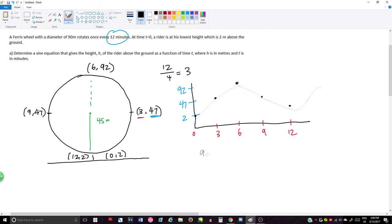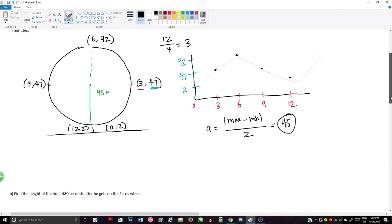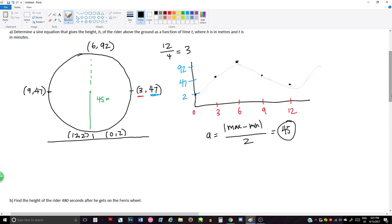So we have our amplitude, which is amplitude, it's max minus min absolute value divided by 2. And here it would be 92 minus 2 divided by 2, and that is actually the radius of this circle. So 45 is going to be our amplitude.